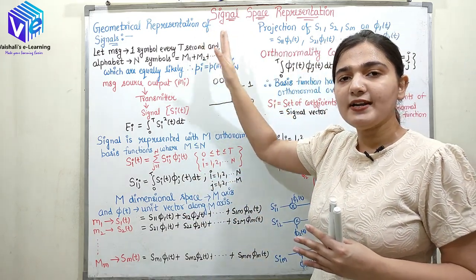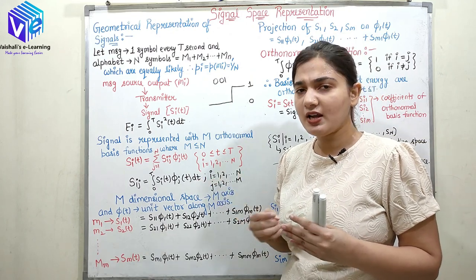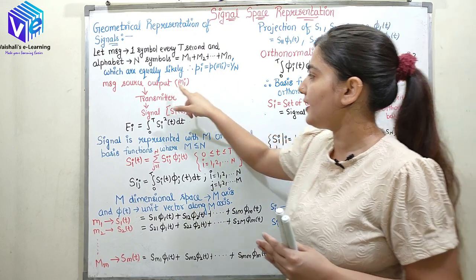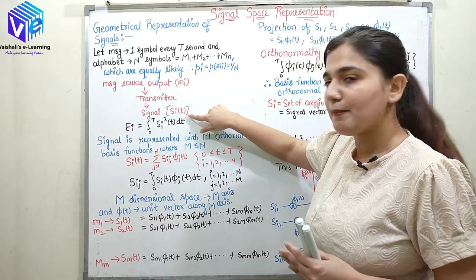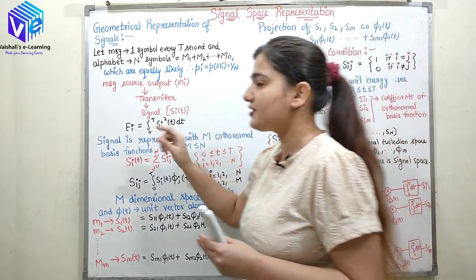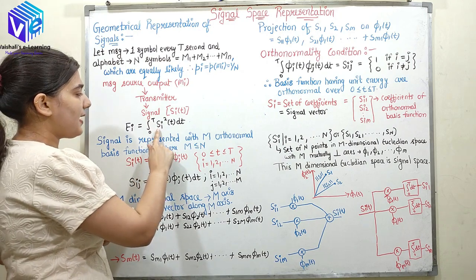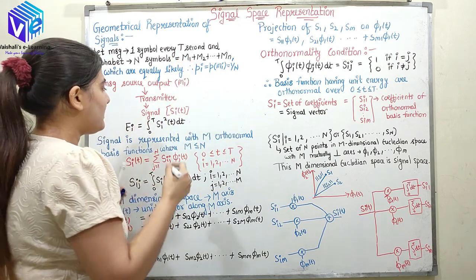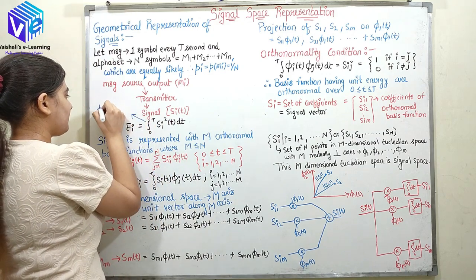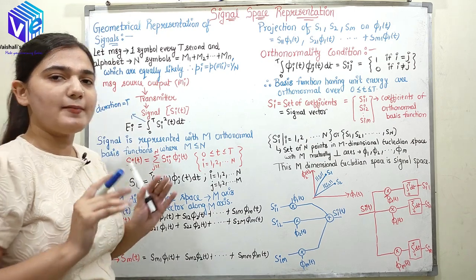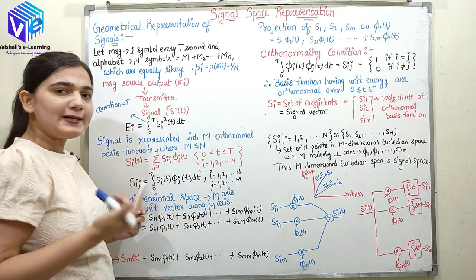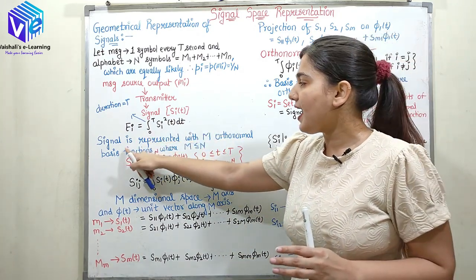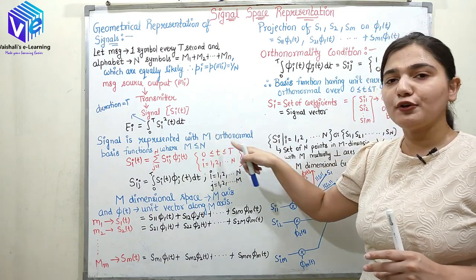Probability of occurrence of each symbol is 1 upon n, which means each symbol is random. Here I'll be studying about the random signal — that is what I was talking about from the first lecture, that my message signal is random. Here I am just transmitting the message signal with the help of signals. These signals have some energy, and the energy of the signal is represented by the integral of amplitude squared from 0 to T. The duration of the symbol is T, so I am integrating over 0 to T: si-squared(t) dt. Now I have represented the signal with the m orthonormal basis functions.